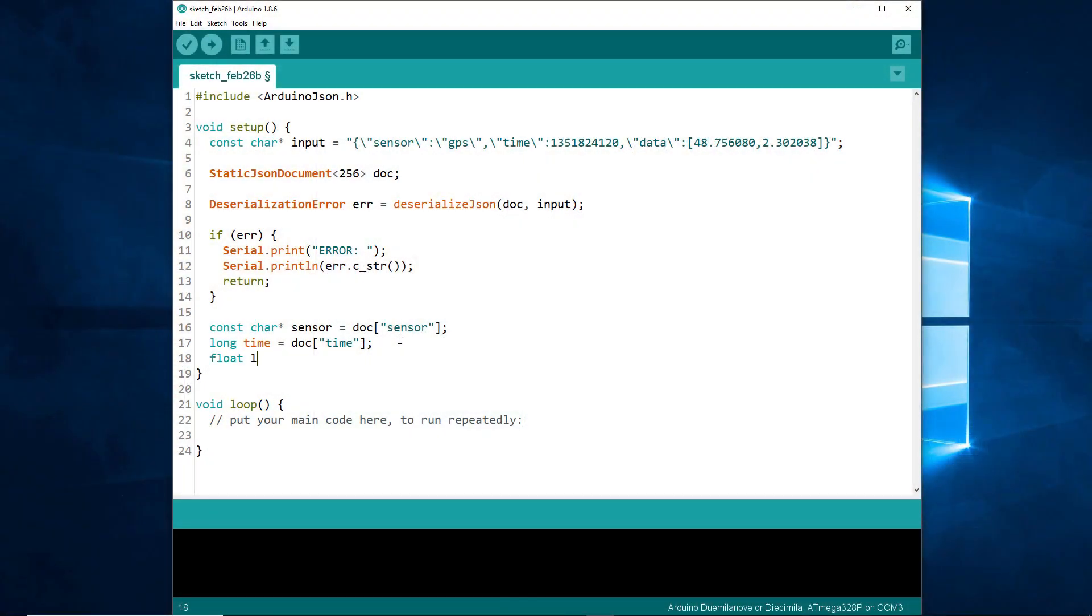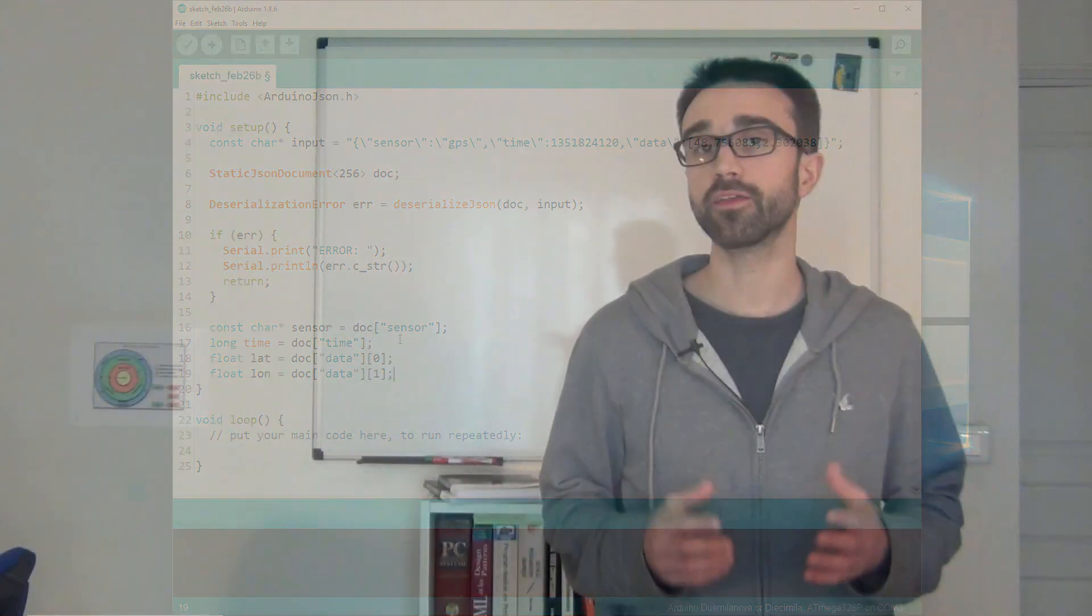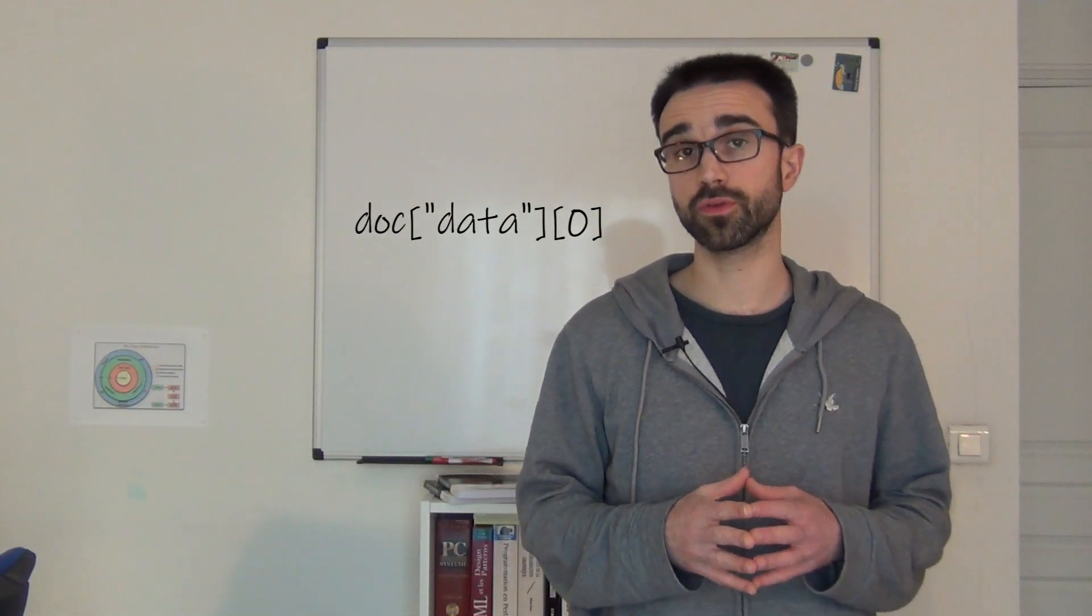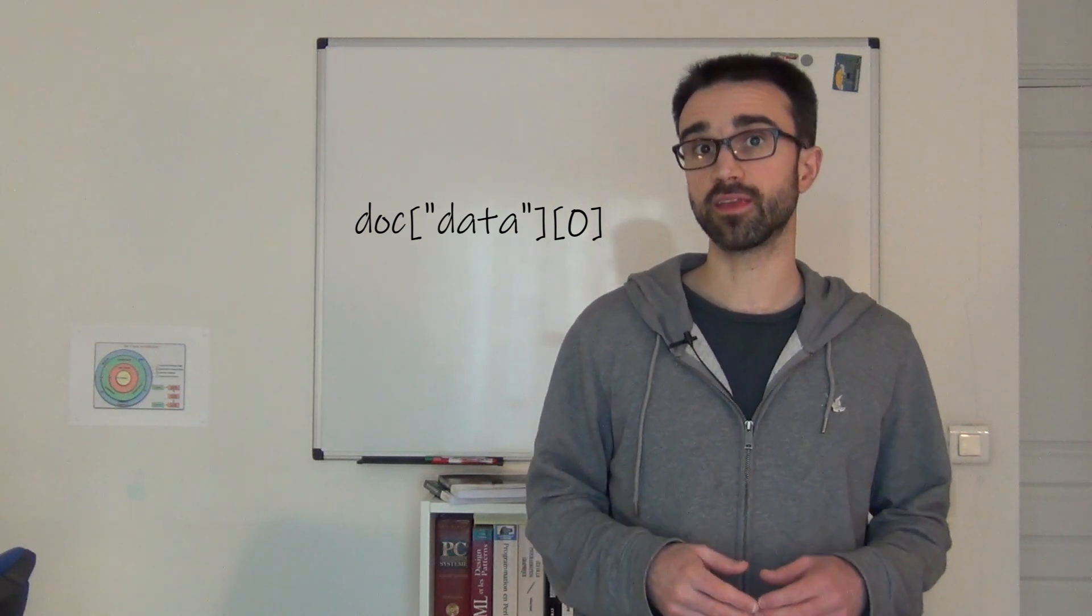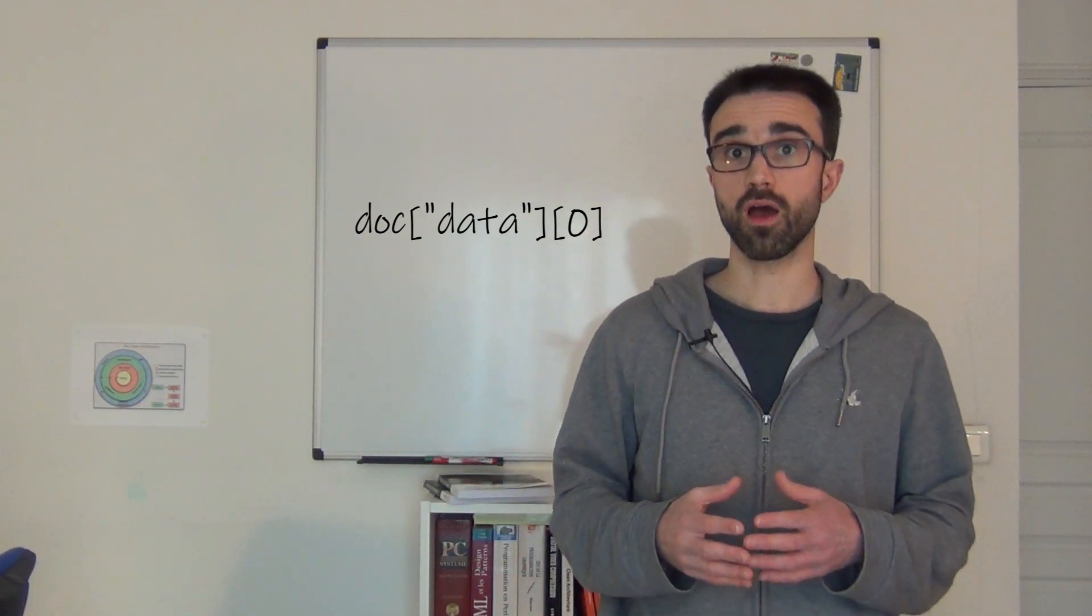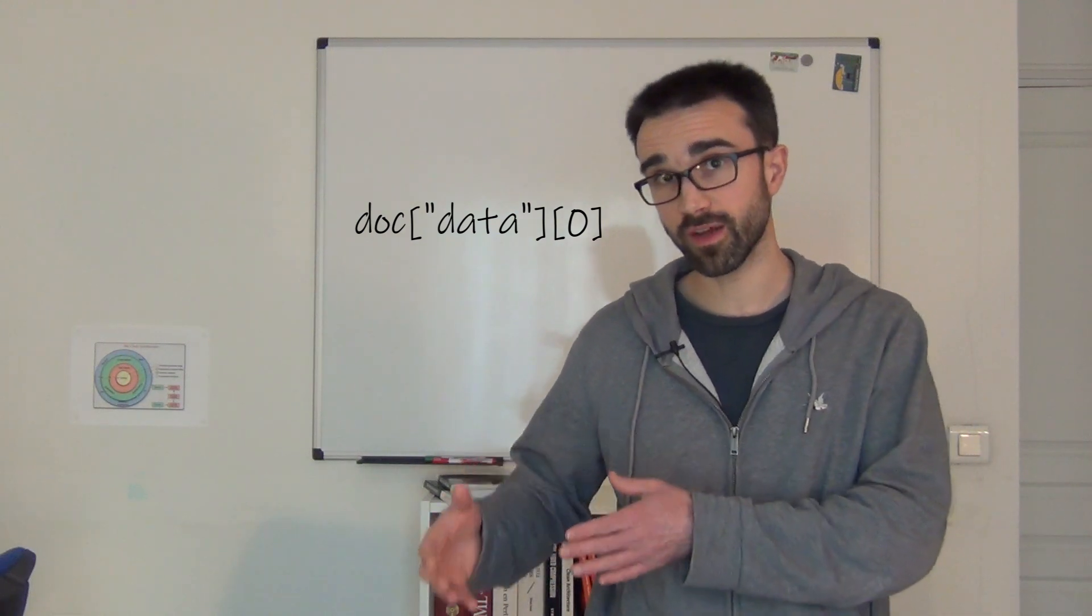The two last values are in an array. To extract the values from an array, we can pass the index to the subscript operator. As you can see, we can chain multiple calls to the subscript operator. It allows us to extract a nested value, a value inside another value.